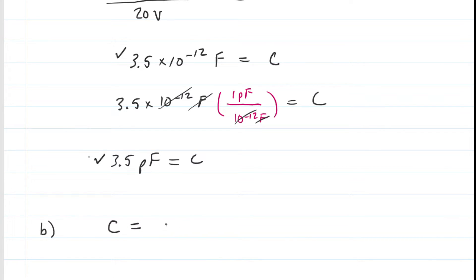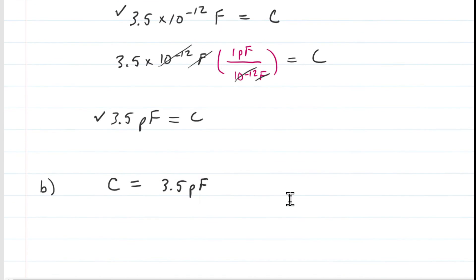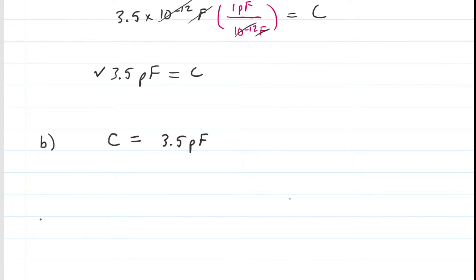The capacitance for part B is still 3.5 picofarads because again, it's an inherent property of those metal objects. The only way to change the capacitance might be to insert some material between them or maybe change the distance between them, but we're doing neither of those things in part B. We're simply increasing the charge, which does not affect the capacitance. So the answer to B is the same as the answer to A.